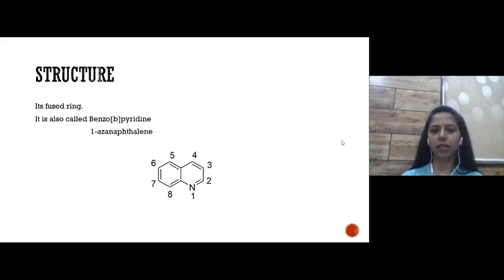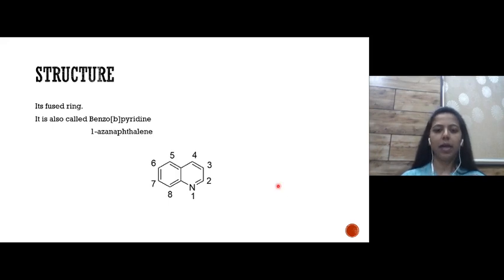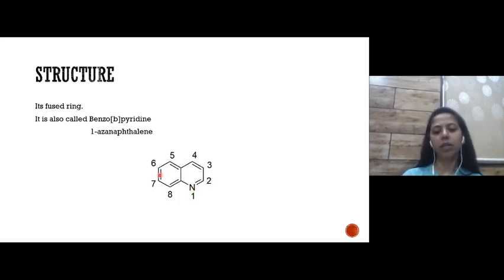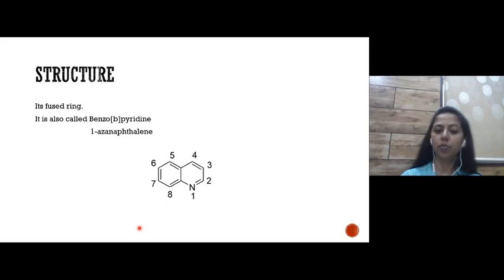Quinoline is a fused ring. In this fused ring we have two rings: one is a benzene ring that is fused with another six-membered heterocyclic ring with one nitrogen atom, that is pyridine. So quinoline is also known as benzopyridine.